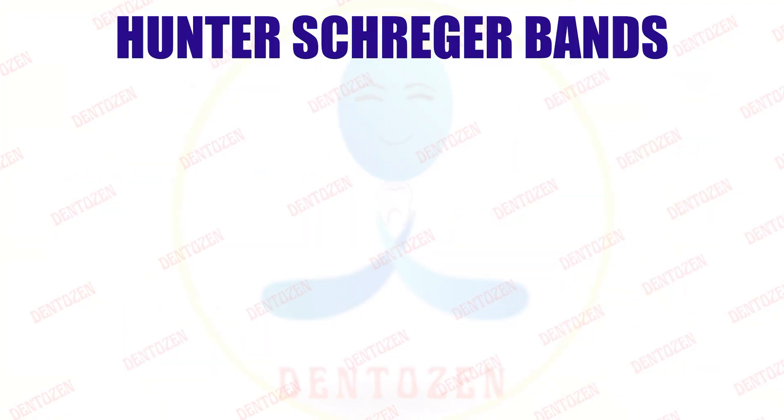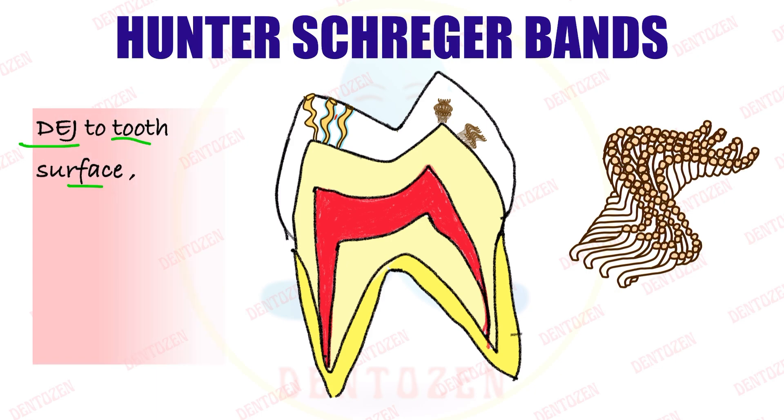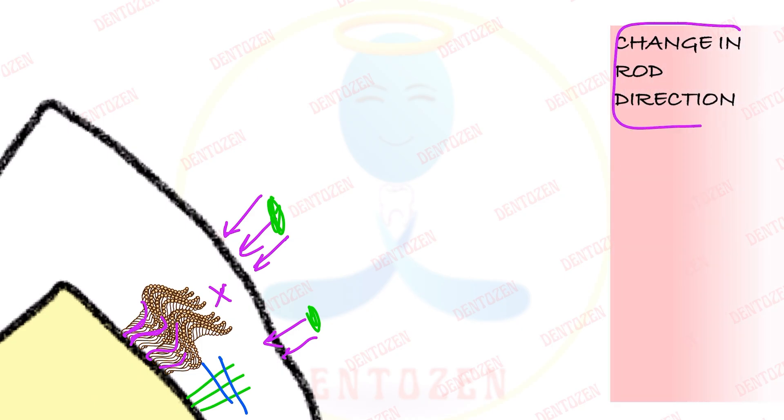Part one: understanding Hunter-Schreger bands. Enamel rods present inside the enamel run from the dentino-enamel junction to the tooth surface in a wavy or tortuous course. Let's magnify this zone — enamel rods are changing their direction to adapt to the function of mastication. When masticatory load comes, if the rods were straight they could easily fracture, but because they have changed their direction they will prevent fracture or breakdown of the rods.